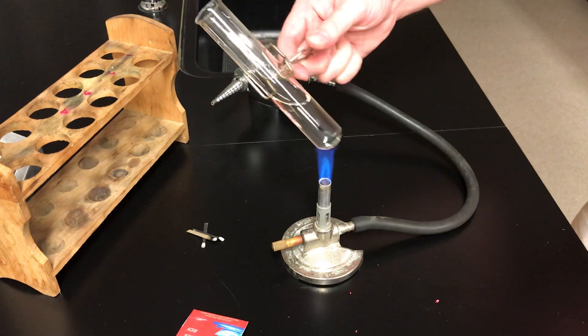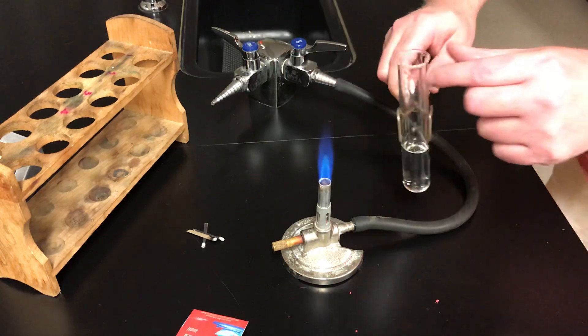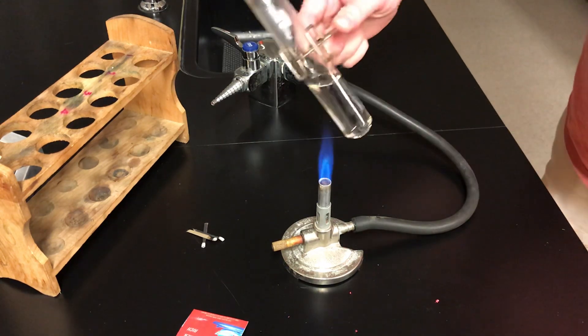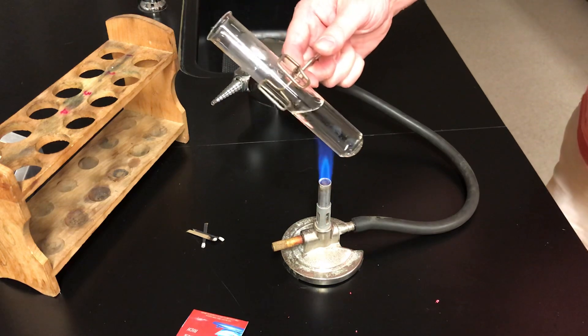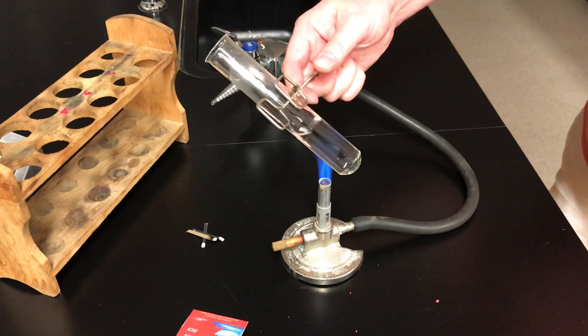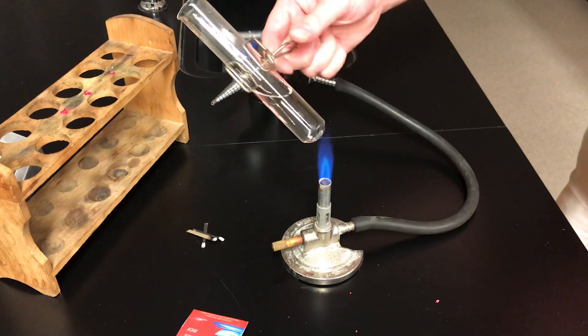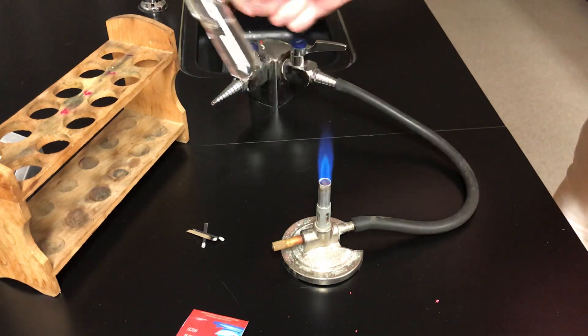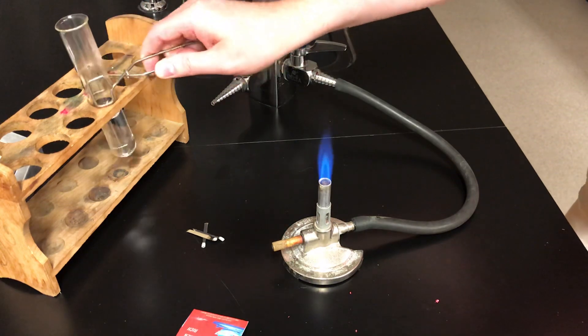So the test tube tongs do not get hot. The test tube itself, even way up here at the top, will not be hot. But at the bottom where you had it in the flame, that part of the test tube is going to be quite hot. So you wouldn't want to touch that. So there we have it. Lighting a Bunsen burner, using it to heat a test tube. Let me just put that in a test tube rack here.